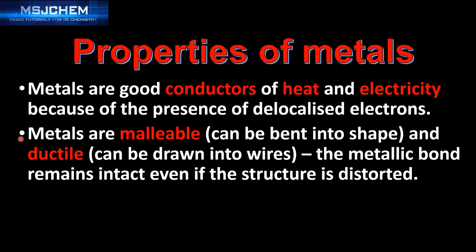Metals are malleable — they can be bent into shape — and they are ductile — they can be drawn into wires. That's because the metallic bond remains intact even if the structure is distorted.